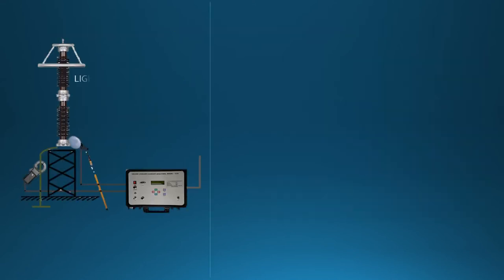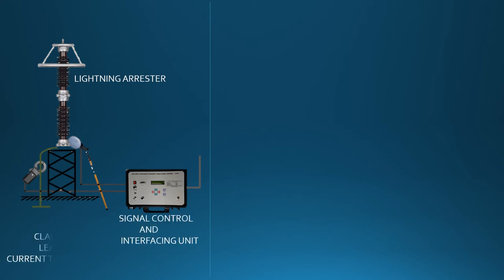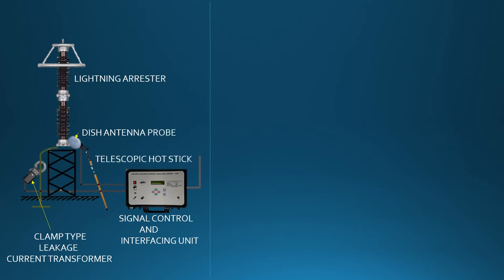The equipment used includes: the lightning arrester, a signal control and interfacing unit, a clamp-type leakage current transformer, a decoupling antenna probe, and a telescopic hot stick.